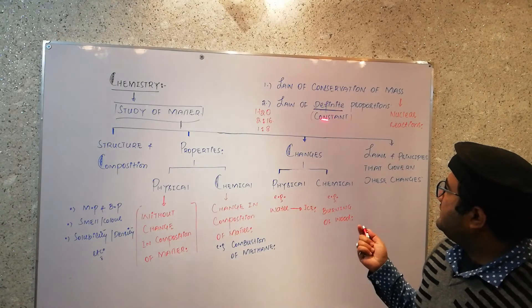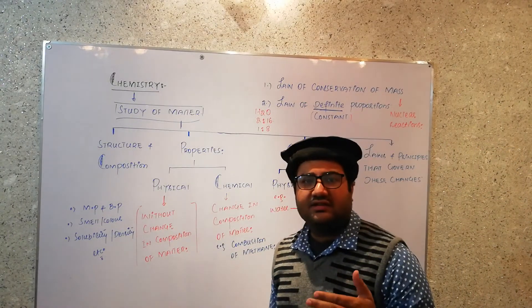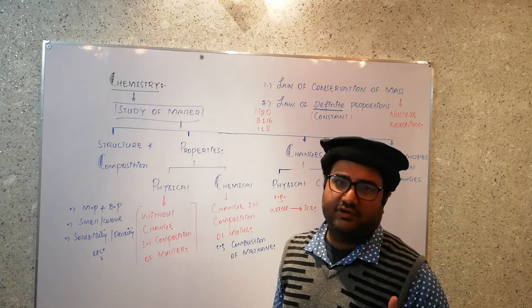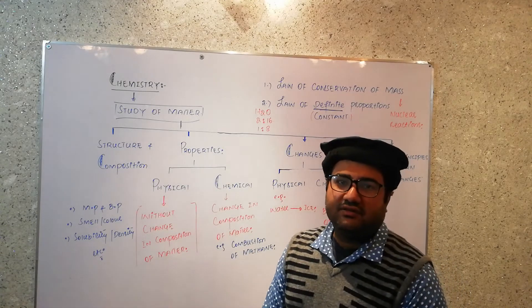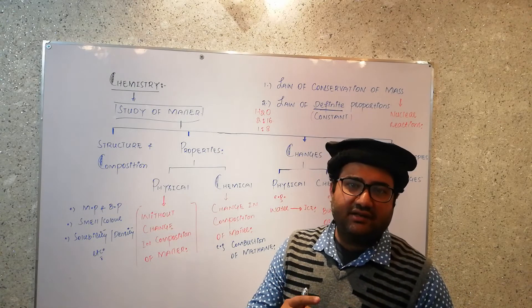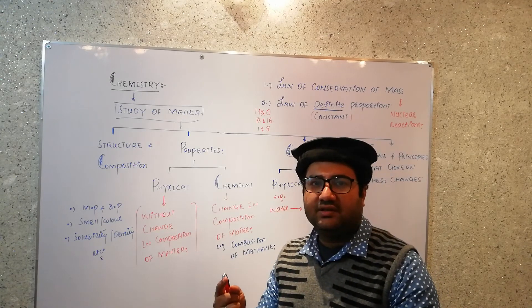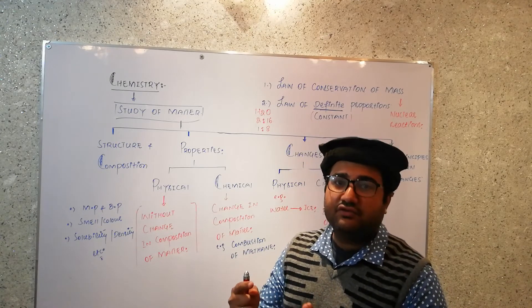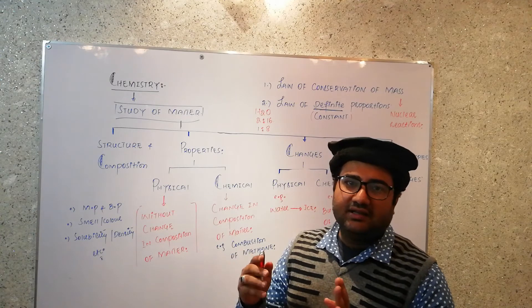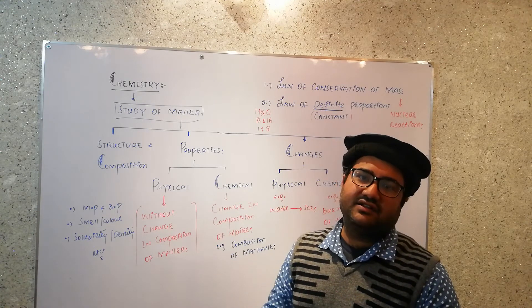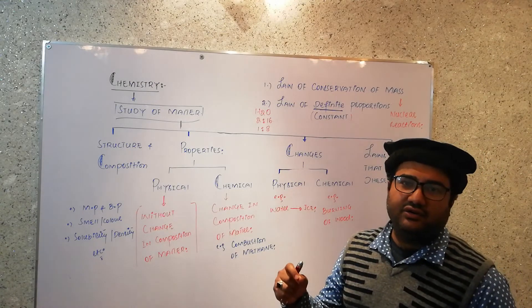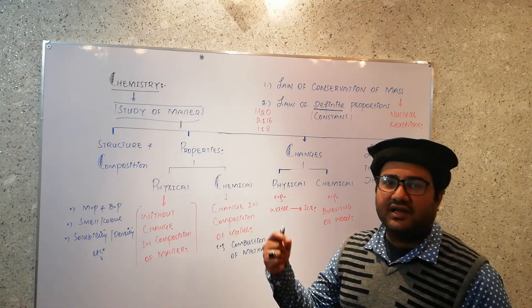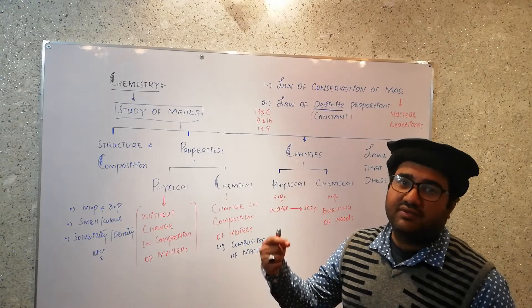Now, the second law is law of definite proportion. Sometimes it is also called the law of constant proportions. According to law of definite proportion, when two elements combine to form a compound, they always combine in a fixed ratio by mass. When two elements combine to form a compound, they combine in a fixed ratio by mass.